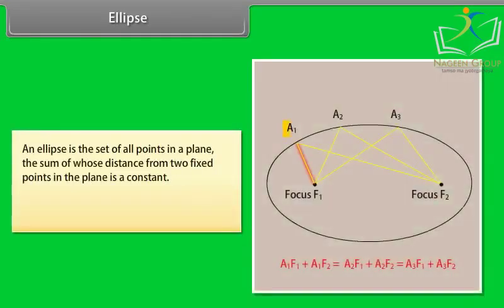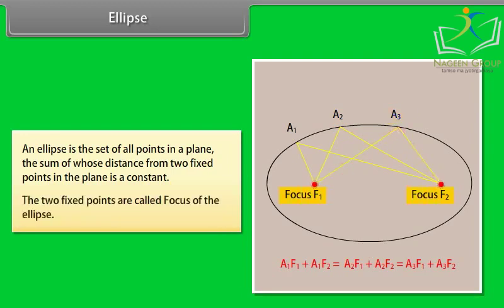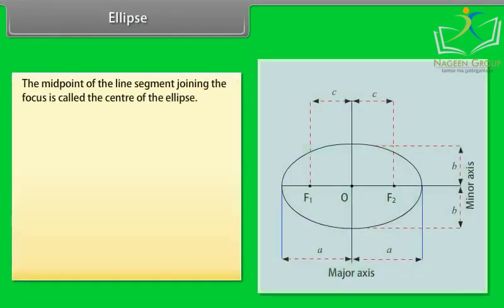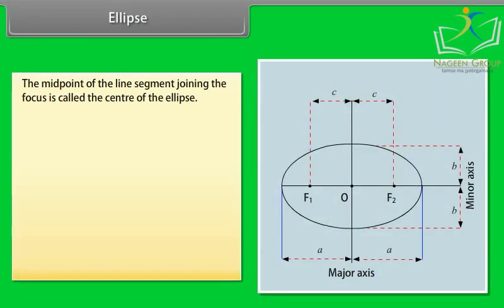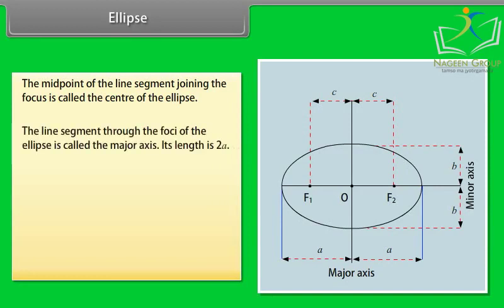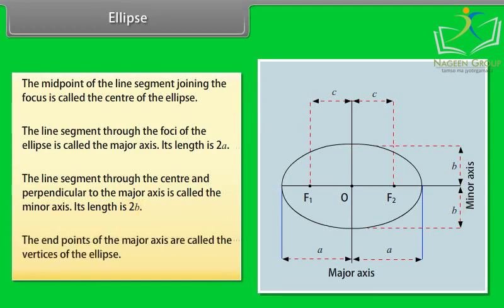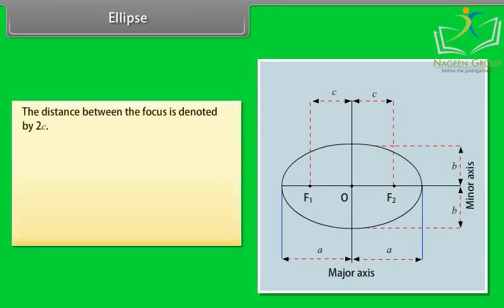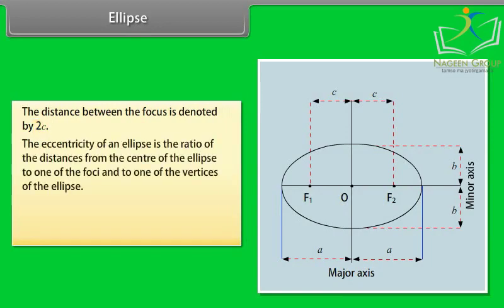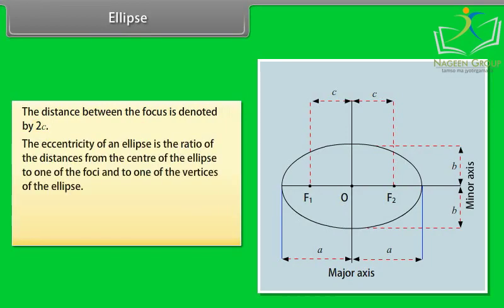An ellipse is the set of all points in a plane, the sum of whose distances from two fixed points in the plane is a constant. The two fixed points are called the foci. The midpoint of the line segment joining the foci is called the center. The line segment through the foci is called the major axis; its length is 2a. The line segment through the center perpendicular to the major axis is the minor axis; its length is 2b. The endpoints of the major axis are the vertices. The distance between the foci is 2c. The eccentricity is e = c/a.